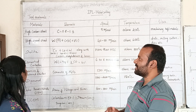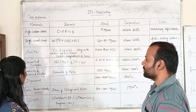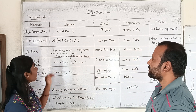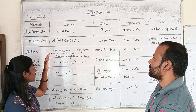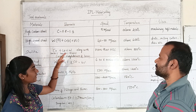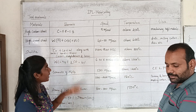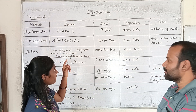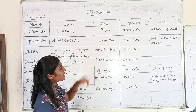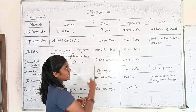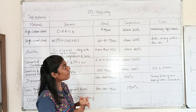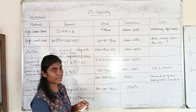First, high carbon steel. In high carbon steel, the carbon content is 0.8 to 1.3%. The speed is 5 meters per minute. The temperature is about 250 degrees Celsius.